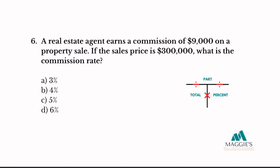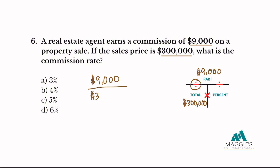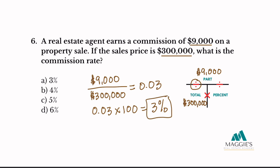Problem 6: A real estate agent earns a commission of $9,000 on a property sale. If the sales price is $300,000, what is the commission rate? The $9,000 commission goes on the top portion, and the $300,000 sales price goes in the total column. Divide: 9,000 ÷ 300,000 = 0.03. Convert to a percent by multiplying by 100 — that equals 3%. The answer is A.